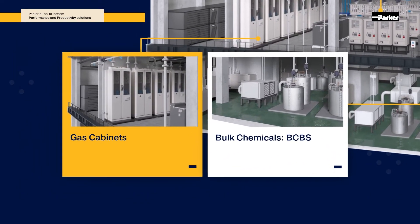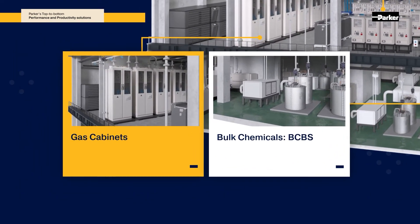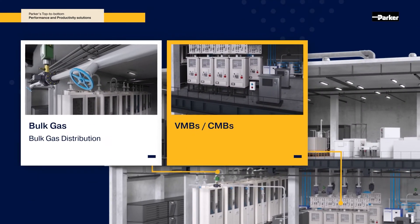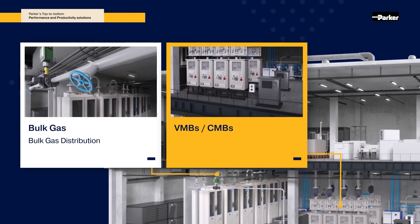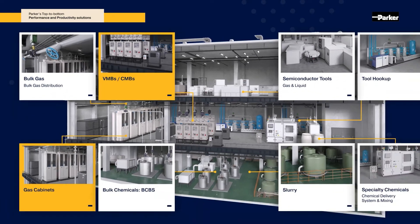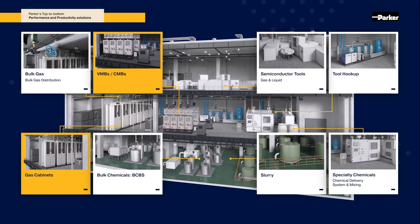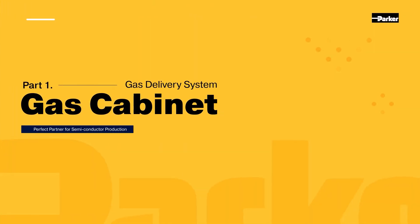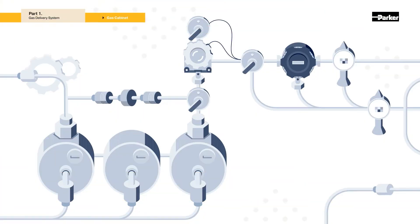The gas delivery system consists of a gas cabinet and VMB, a device that distributes specialty gas to semiconductor manufacturing equipment. Parker's ultra-high purity diaphragm valve, regulator, and check valve are used in the gas cabinet.